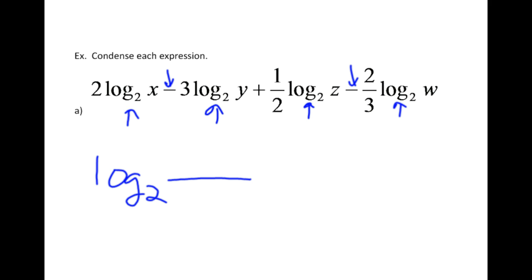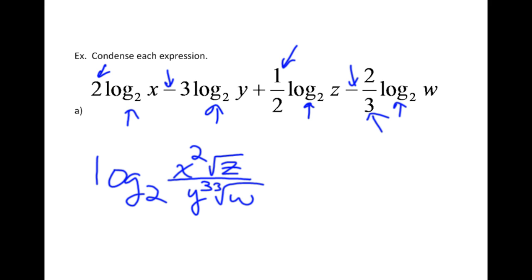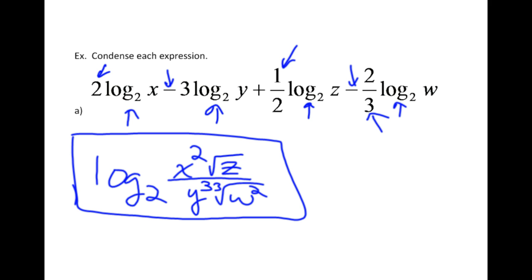I start placing the variables where they belong in the single argument. Since x is a positive log it goes on top, and it had a coefficient of 2 so it becomes x squared — by putting the 2 back inside as an exponent. The y is negative so it goes to the bottom and its exponent becomes a cubed. The z is positive so it goes on top of the fraction, but since it has a 1/2 in the front, it goes back in as the square root of z. And for the two-thirds in front of w — w would be cube-rooted and then squared on the inside. That's your answer when condensing multiple logs into a single log; you only write the word log once.